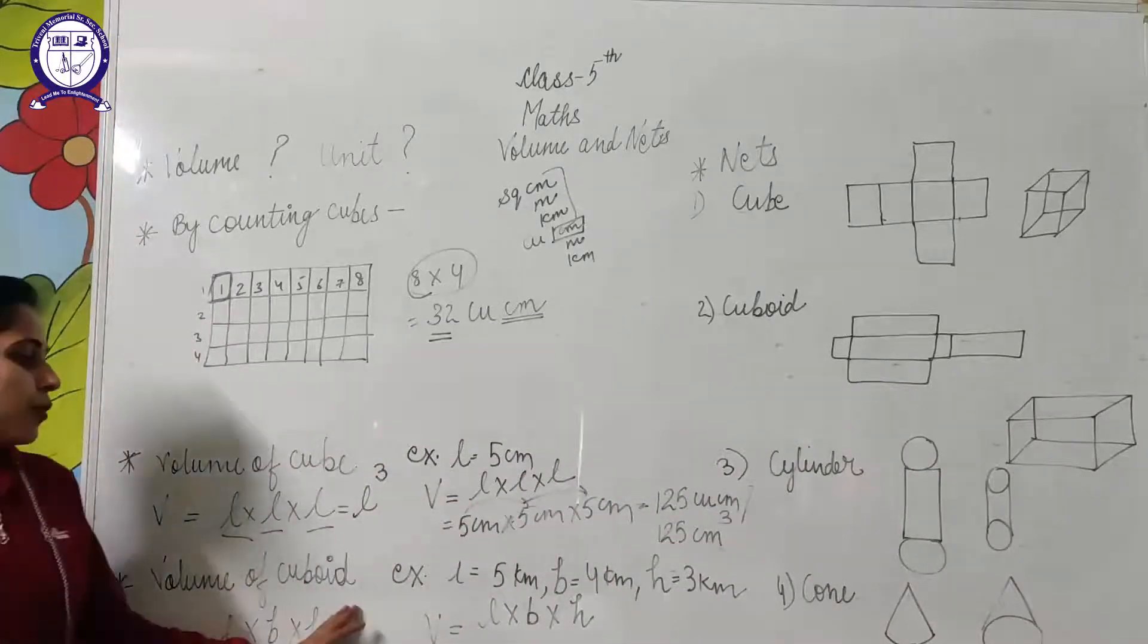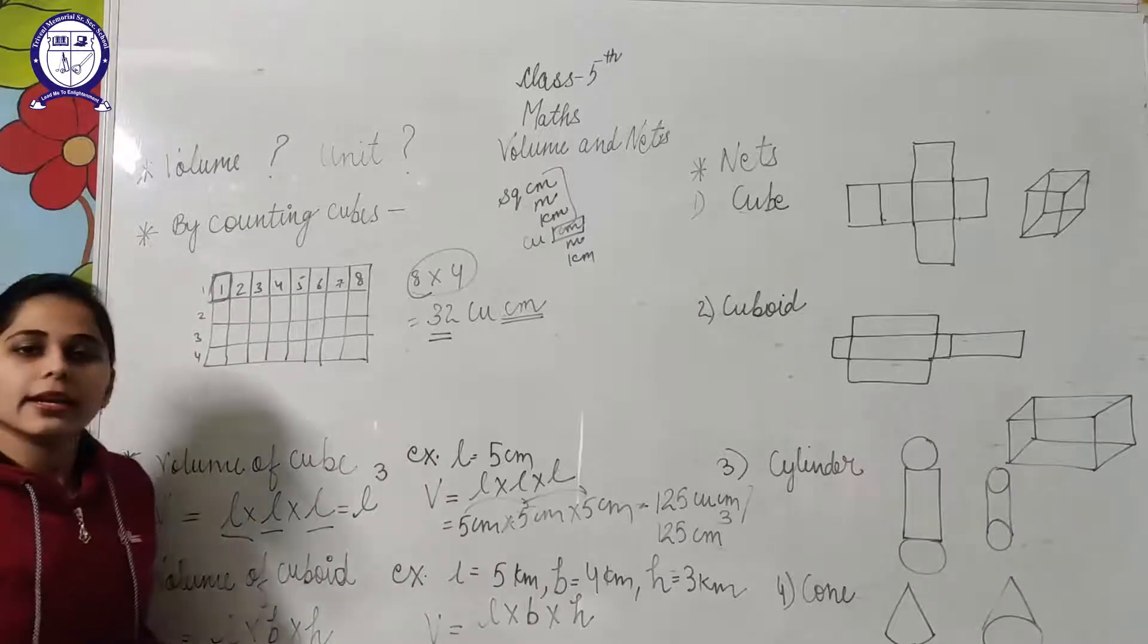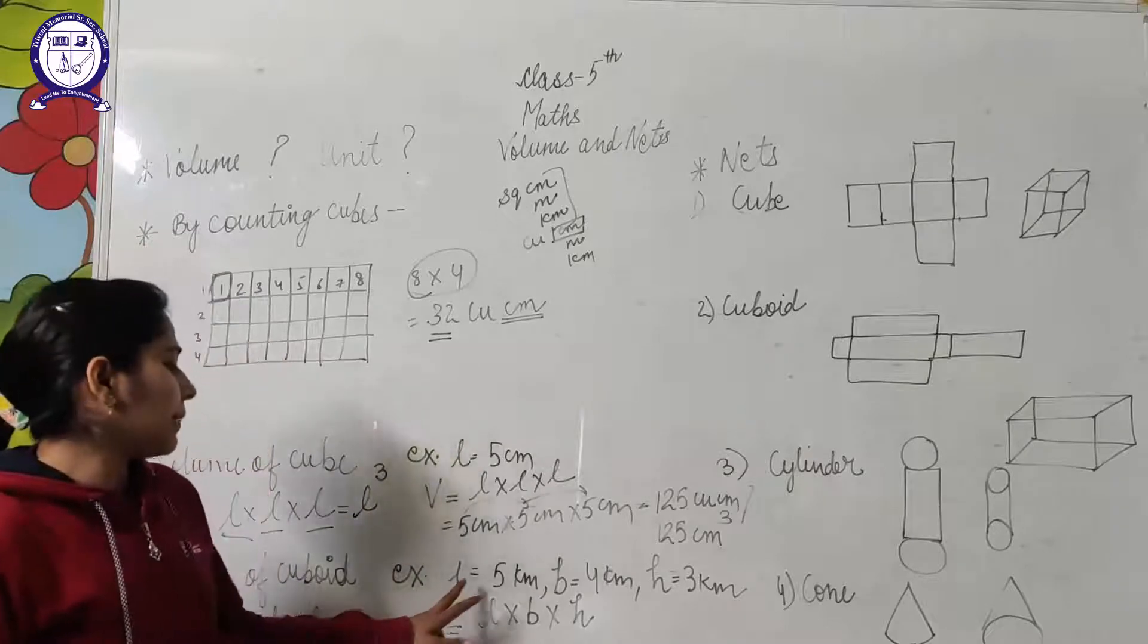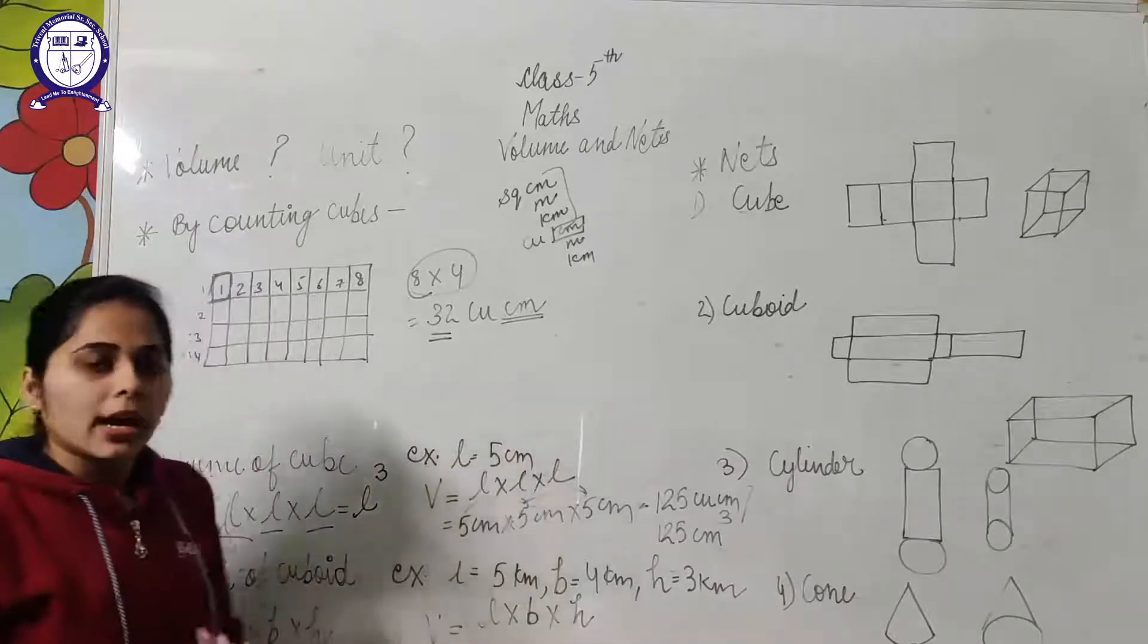Now volume of cuboid. In cuboid, we have length, breadth, and height. To find out the volume, we will multiply length by breadth by height.